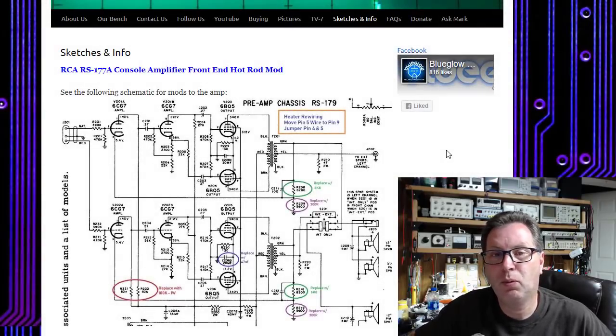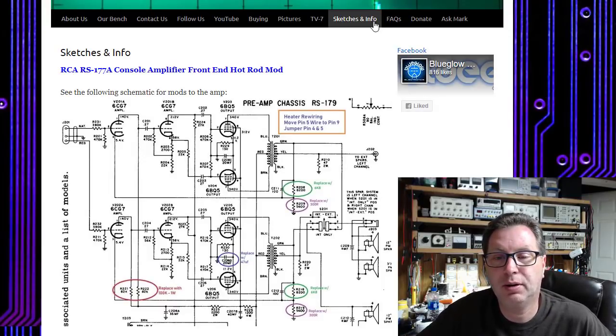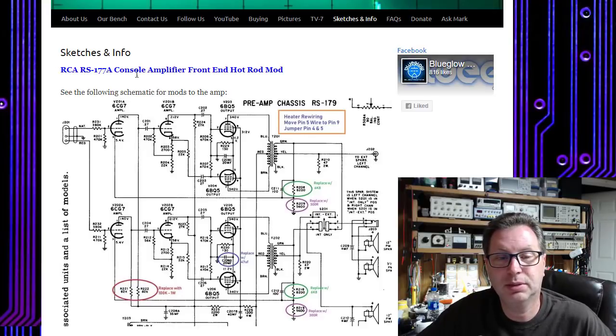If you go to my website, blueglow.net, and click on Sketches and Info, I've now added the RS-177A console amplifier front-end hot rod mod. Here's the schematic I've posted. I'm going to walk you through that a little bit.